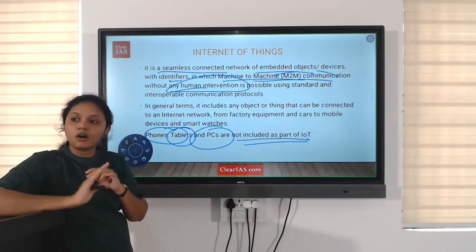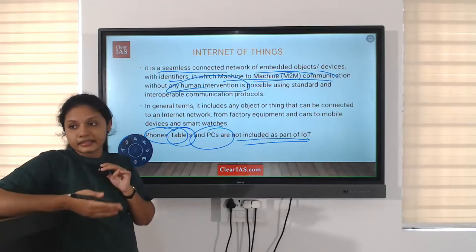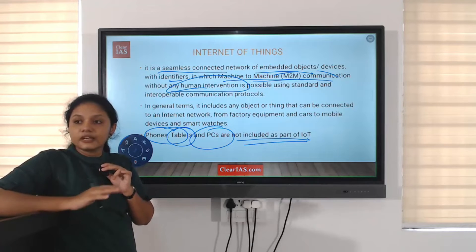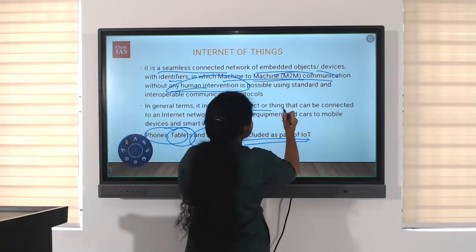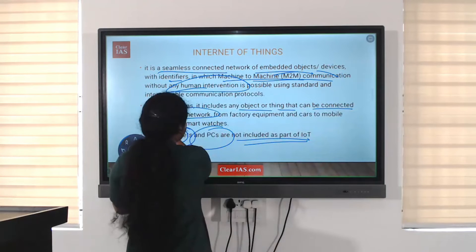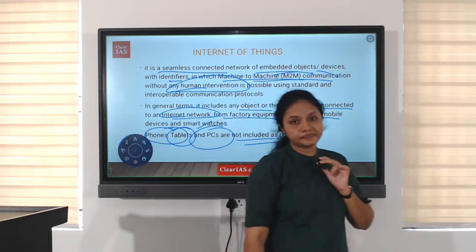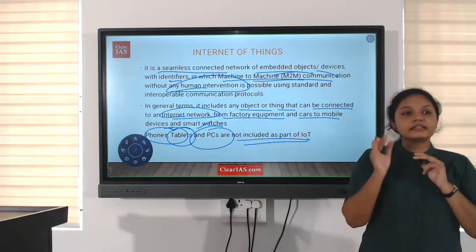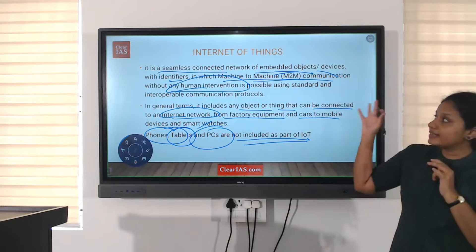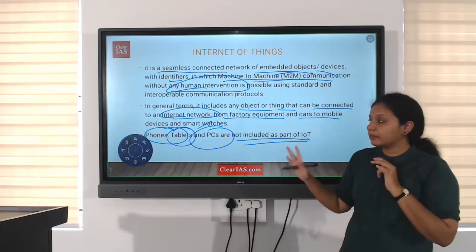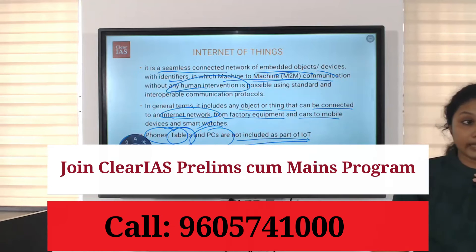All these work because of sensors and other electronic devices and identifiers. The basic requirement is internet. In general terms, IoT includes any object or thing that can be connected to an internet network — from factory equipment and cars to mobile devices and smart watches. The only requirement is that it should be a device we can connect to the internet. Importantly, phones, tablets, and PCs which we already use with the internet are not involved in IoT.